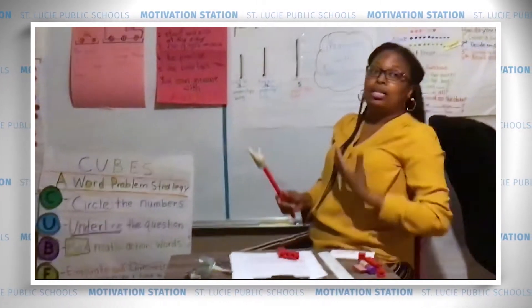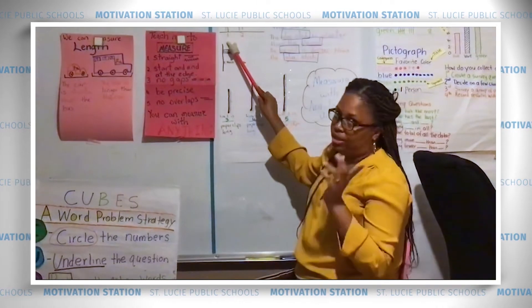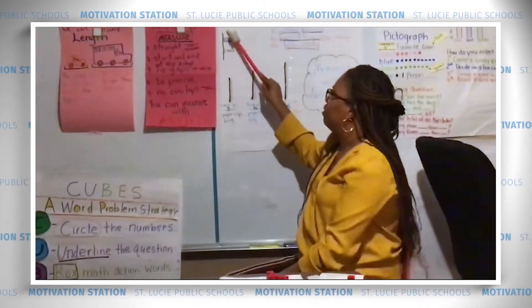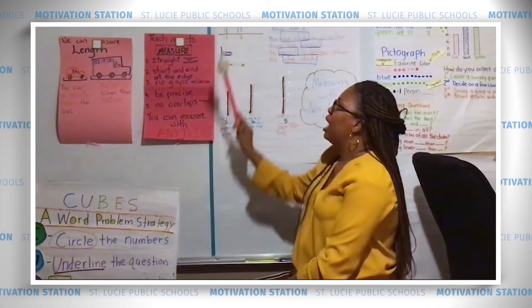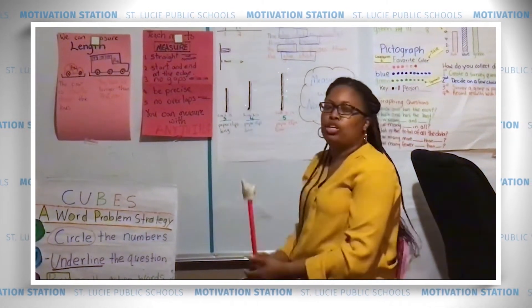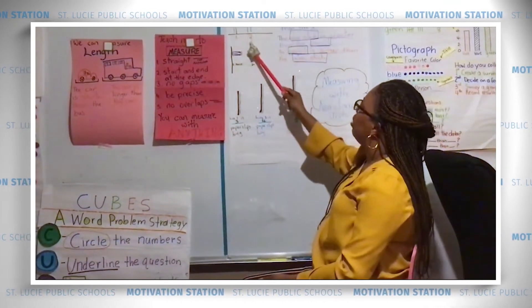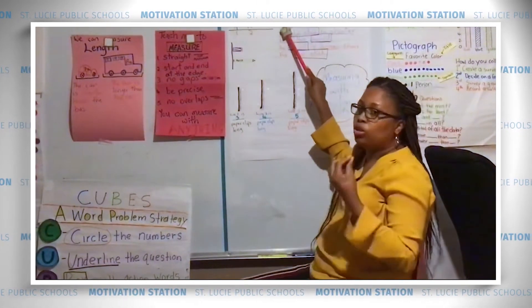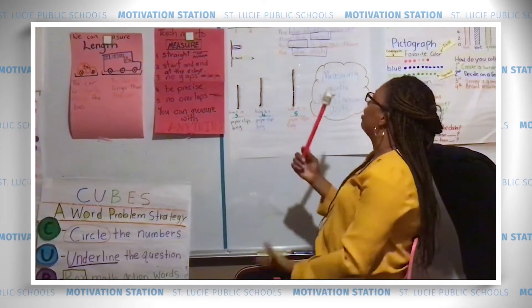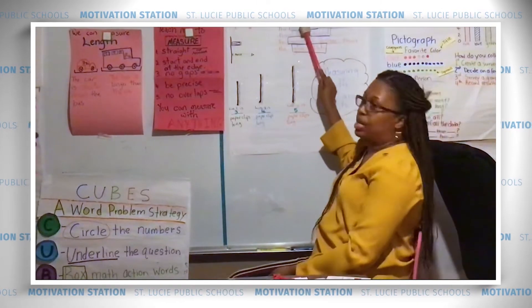A lot of times when we measure, we want to compare objects. I have two trees here — number one and number two. I'm not a good artist, so don't laugh at my pictures! Looking at both of them, maybe one is shorter and one is taller. Tree number two is taller than tree number one. So we can compare the height — therefore, tree number one is shorter than tree number two.